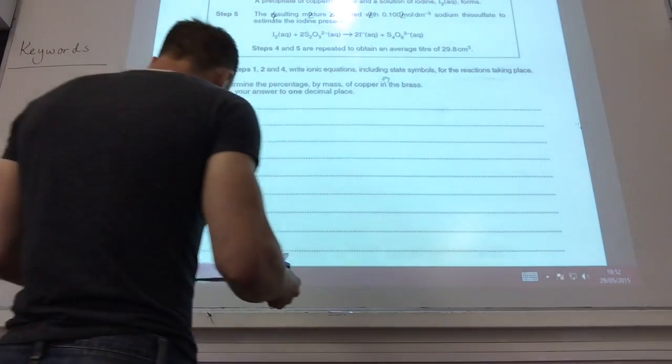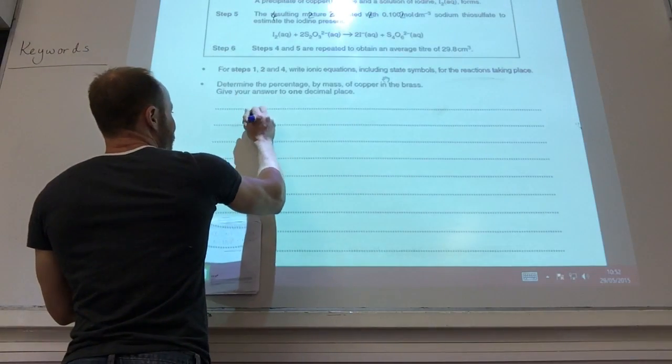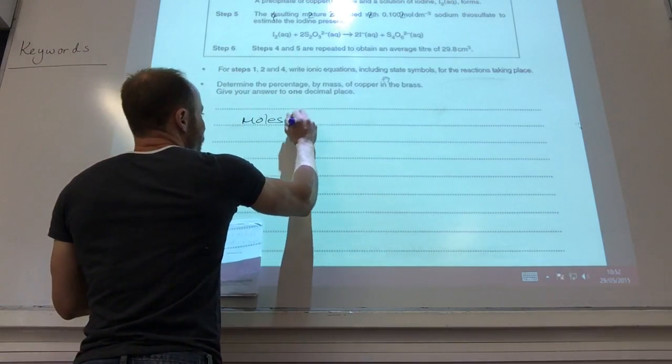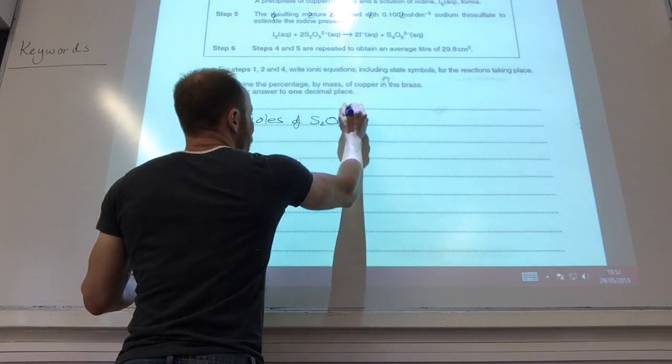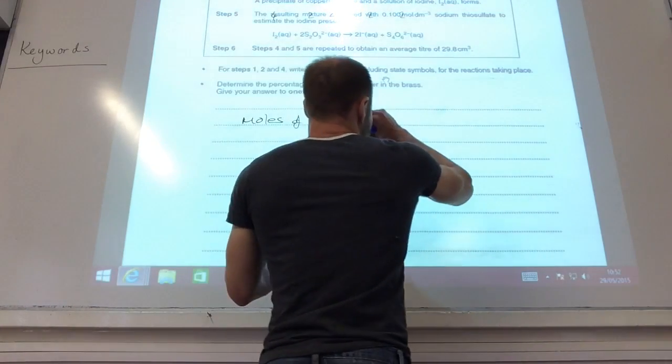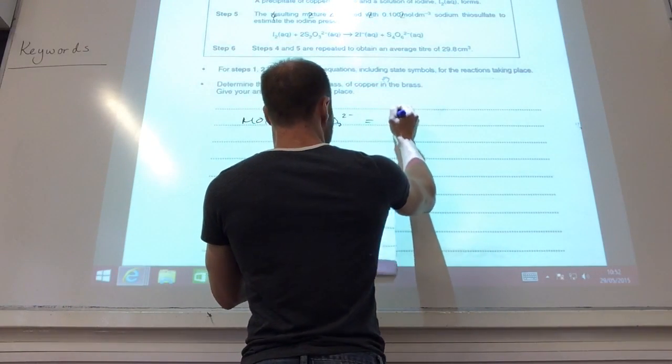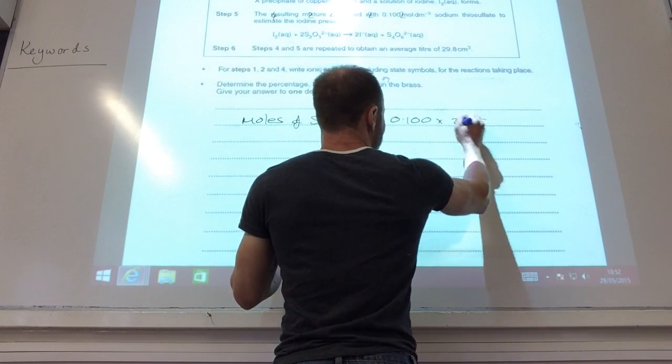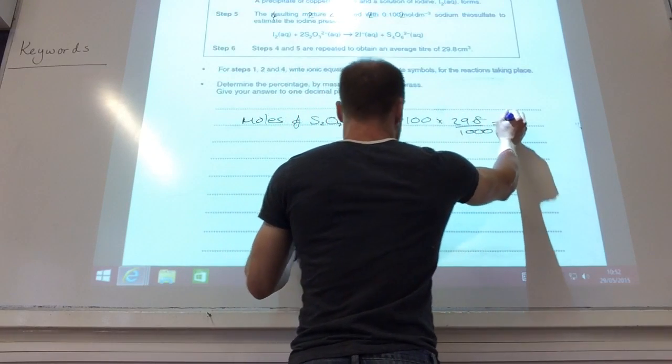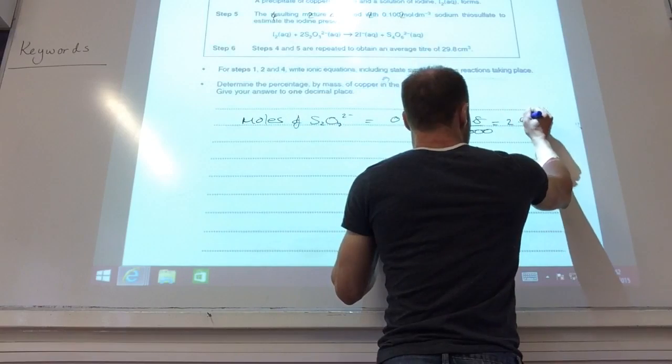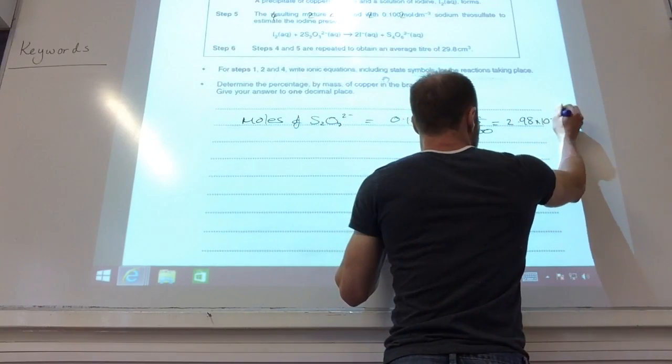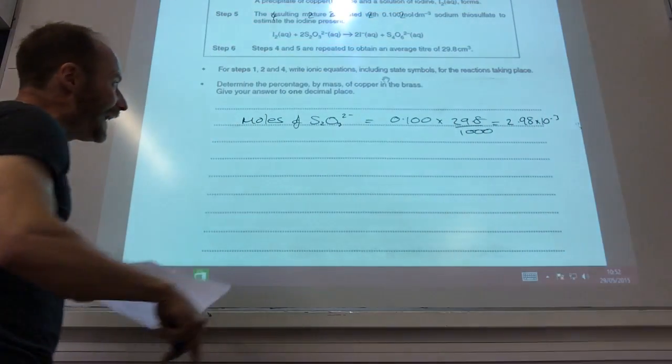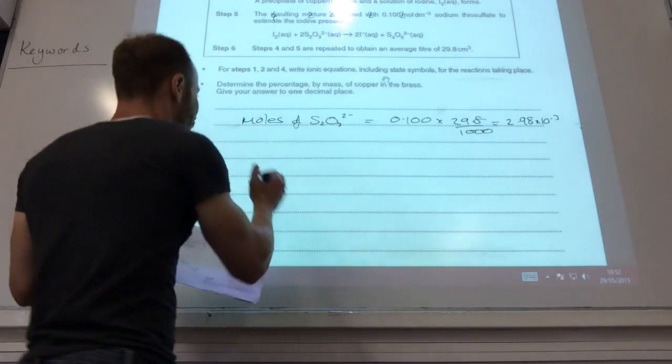And the final one I now need to determine the percentage of copper. So the first thing you do is you work out your moles of thiosulfate. That's going to be your concentration, 0.100 times the volume of 29.8 over a thousand. And if you do that, you get 2.98 times 10 to the minus three.